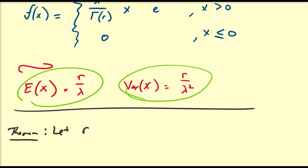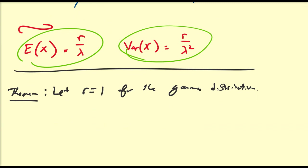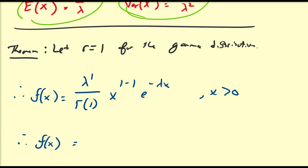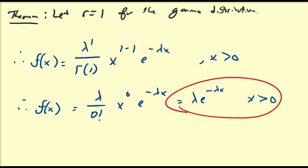Theorem: let r equal 1 for the gamma distribution. Then f of x equals lambda to the 1st divided by gamma of 1, times x to the 0, times e to the minus lambda x, which simplifies to lambda times e to the minus lambda x for x greater than 0. This is the exponential PDF — so the exponential distribution is a particular example of the gamma distribution.